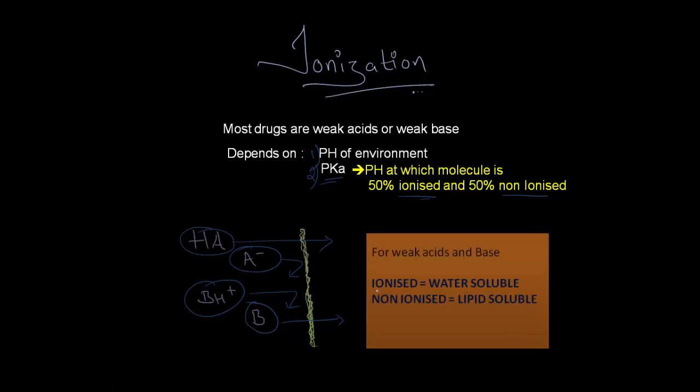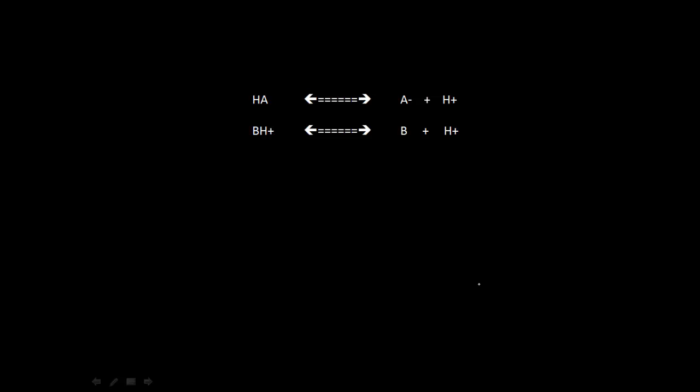Here's the takeaway message: if a drug is ionized, it is water soluble, it goes along with water of your body through the urine and can be cleared. Non-ionized drugs can be absorbed from your gut because they are lipid soluble.